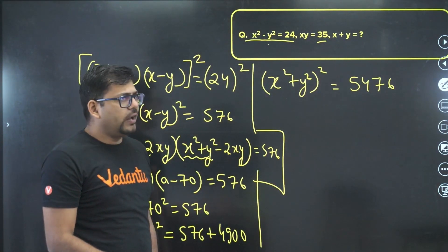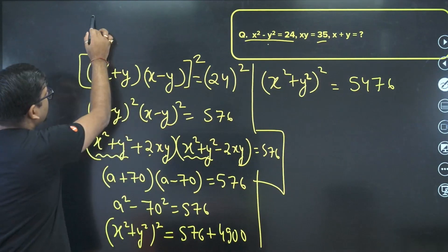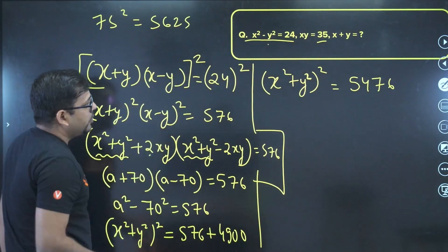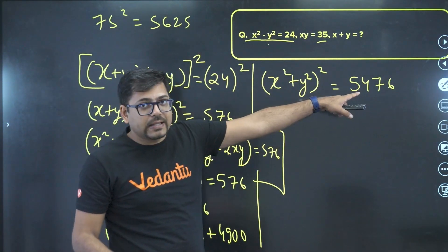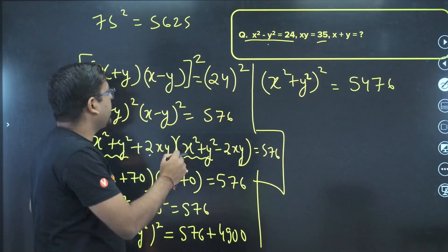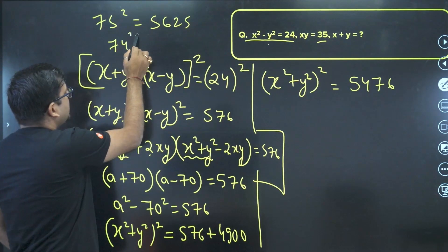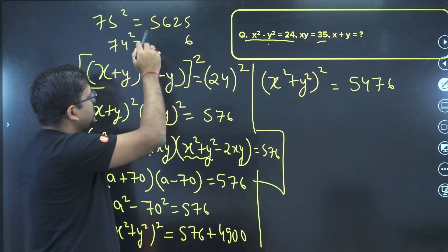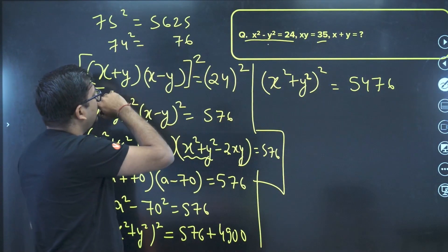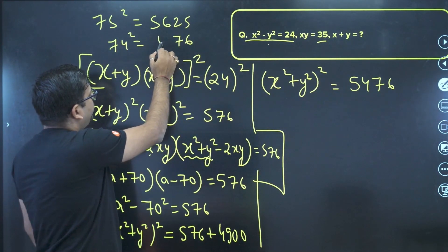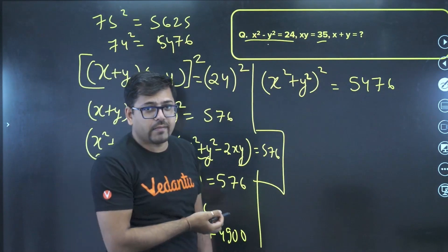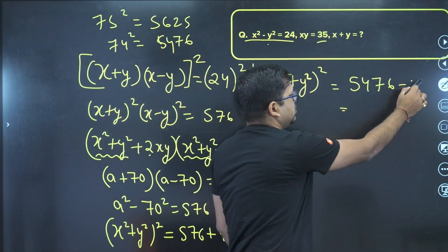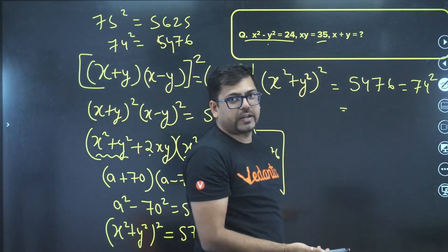74² — let's compute: 74² equals 5476. So 5476 is indeed 74 squared. Therefore (x²+y²)² equals 74².